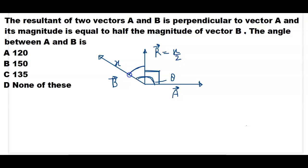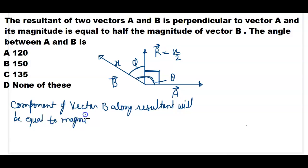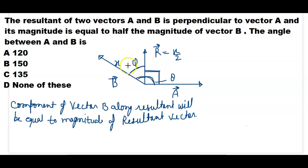The angle between vector B and the resultant is phi. The component of vector B along the resultant will be equal to X by 2. Vector B has magnitude X, and the component of vector B along the resultant is X cos phi. So X cos phi is equal to the magnitude of the resultant, which is X by 2.